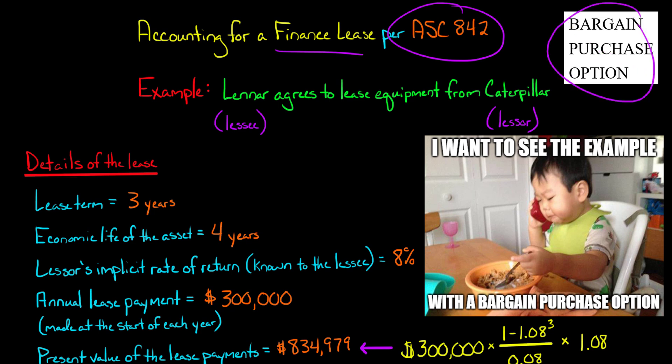I'm going to show you how the presence of a bargain purchase option will alter the initial measurement of the lease liability, as well as the interest expense that the lessee will record throughout the lease. So let's get to the details. We've got a three-year lease and a discount rate of 8% — that's the lessor's implicit rate of return, which is known to the lessee. So the lessee is going to use that when doing the time value of money calculations for the present value of the lease payments.